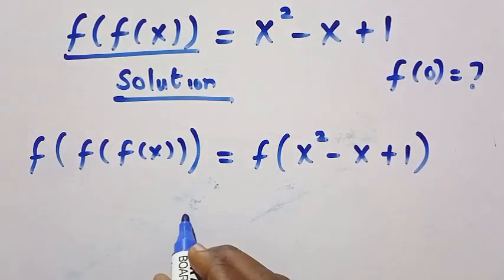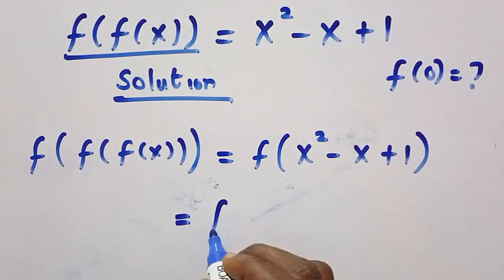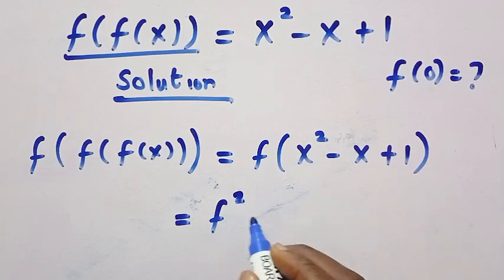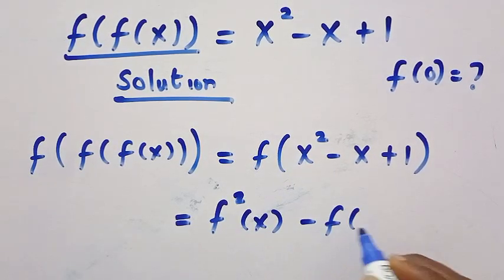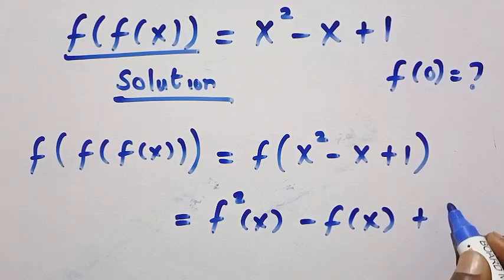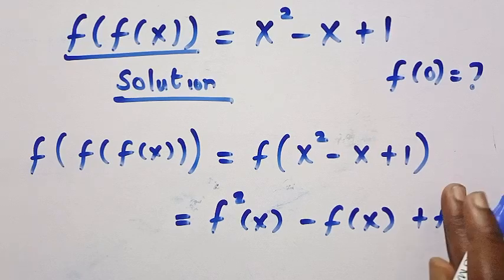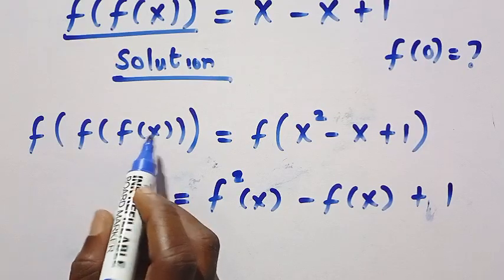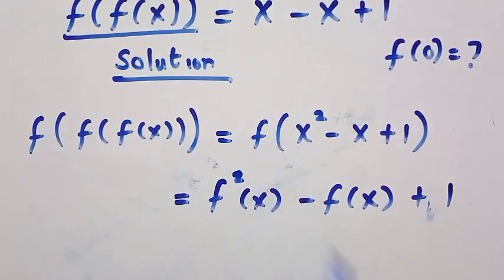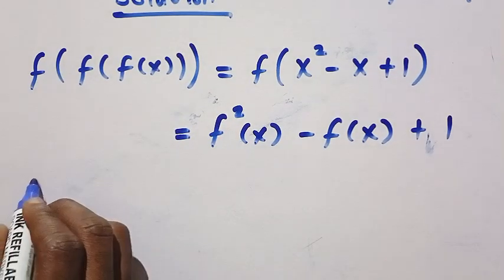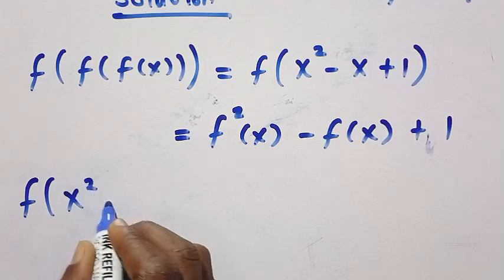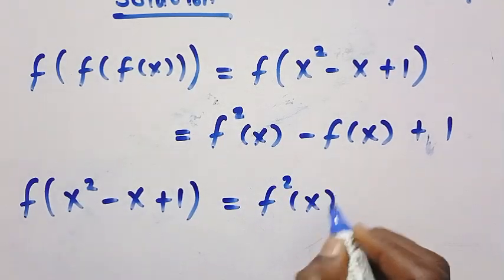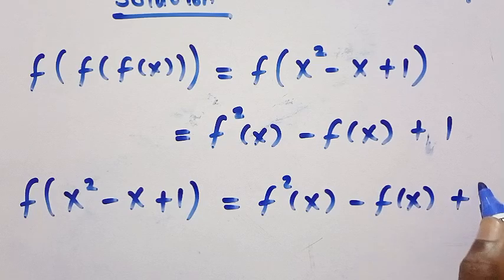When I open this parenthesis, we are going to have this as f squared. So it means we consider this as f squared of x minus f of x, then plus f of 1. And f of 1 here is a constant, so we just leave it as 1. Then from this, we have f of f of f of x, which gives us x squared minus x plus 1 from above. Replacing it: f of f of x squared minus x plus 1 equals f squared of x minus f of x plus 1.